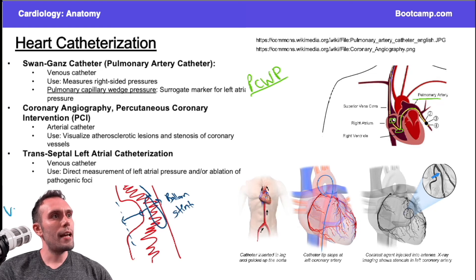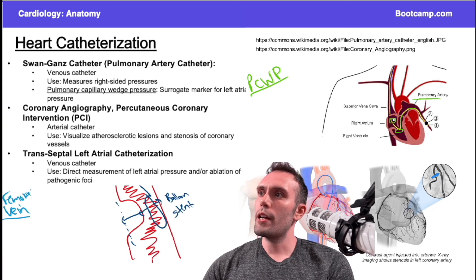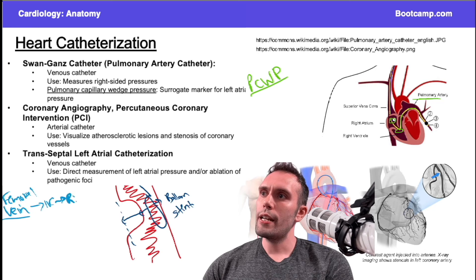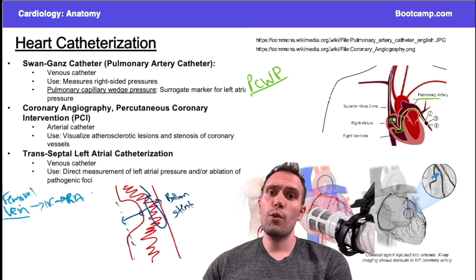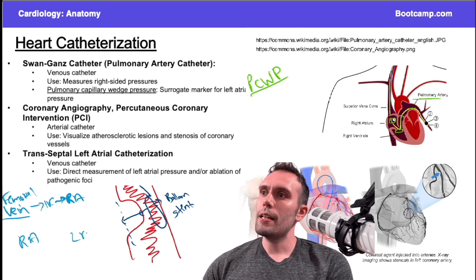The approach uses a venous catheter through a venous access point such as the femoral vein. You run the catheter through the femoral vein, up through the IVC, and eventually reach the right atrium. From there, instead of going to the right ventricle, you take advantage of the interatrial septum between the right and left atrium.